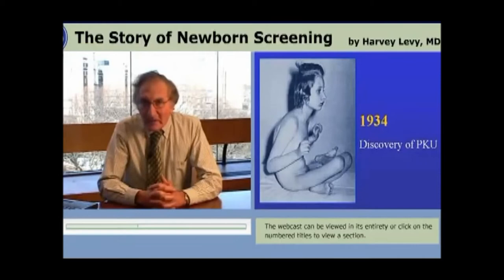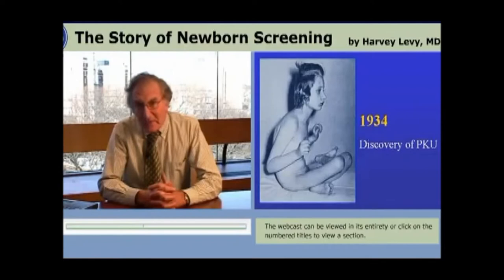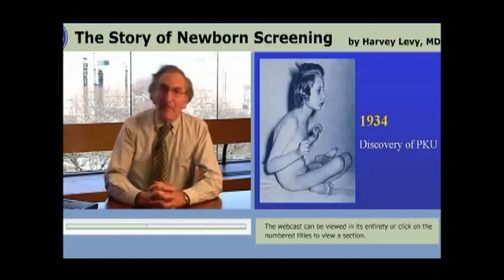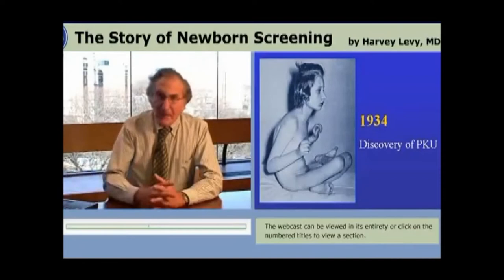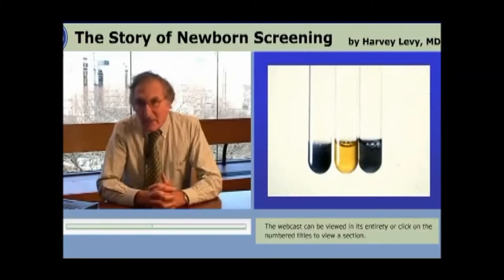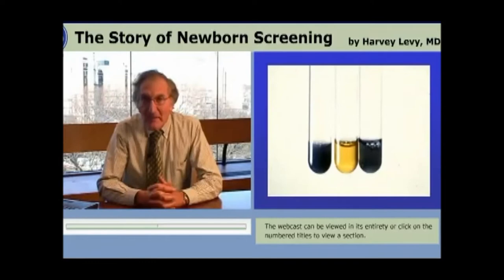The second important event that led to newborn screening was further proof of the inborn error of metabolism: the discovery of PKU, 27 years after the Croonian lectures, in individuals who were retarded — sometimes very severely retarded. The discovery of PKU really illustrated very much of what Garrod said. Basically, it advertises its presence in a conspicuous way by the excretion of a substance that responds to a test.